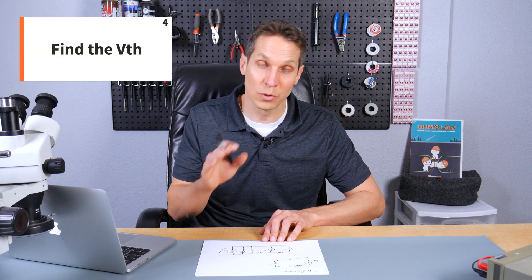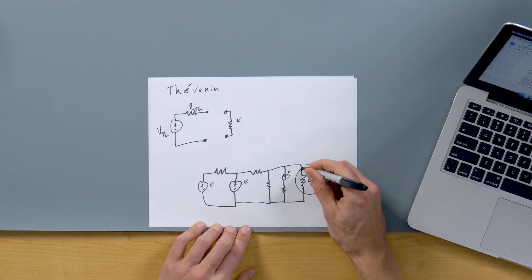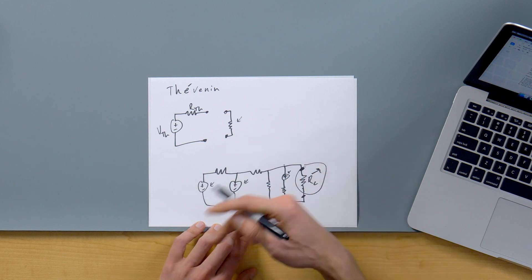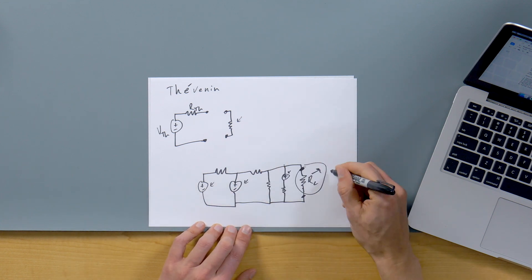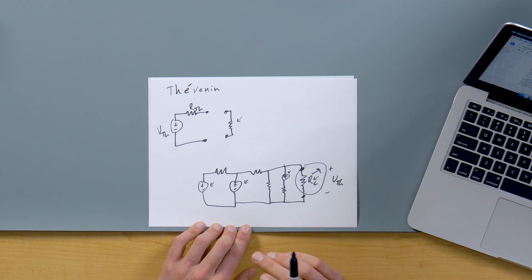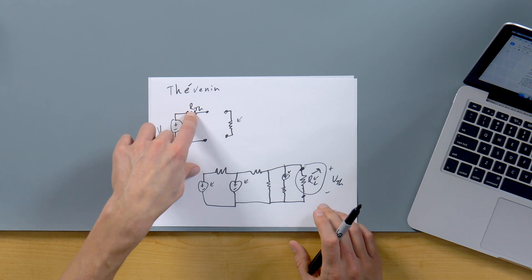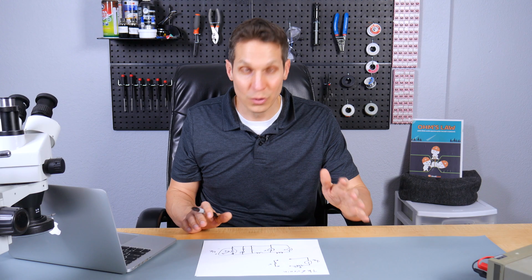Now, the fourth step is we're going to be looking for our Thevenin voltage. Now, because we have removed this load, and we're going to treat this as an open, this is where you go through and you will have to solve this using Kirchhoff's current law, Kirchhoff's voltage law, whatever, and find out what your voltage is right here. And whatever that voltage is, remembering that this is now an open, that is your Thevenin voltage. So you've just found out your resistance, your Thevenin resistance, and now you're finding out your Thevenin voltage. And so those are steps one through four.